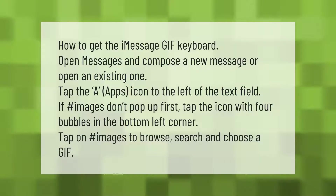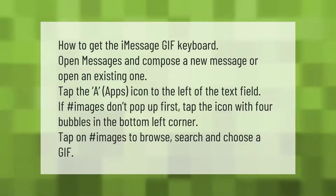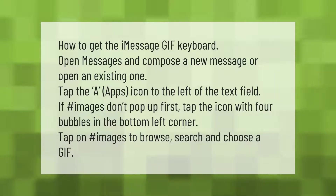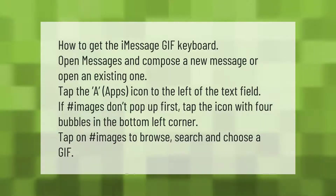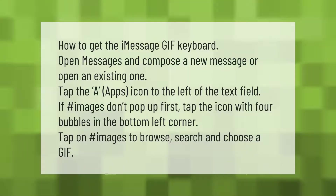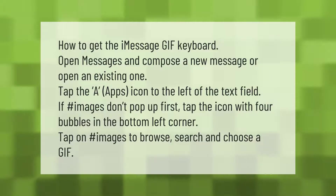How to get the iMessage GIF keyboard: open Messages and compose a new message or open an existing one. Tap the apps icon to the left of the text field. If #images doesn't pop up first, tap the icon with four bubbles in the bottom left corner. Tap on #images to browse, search, and choose a GIF.